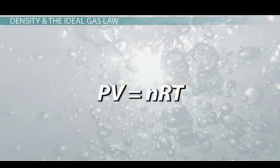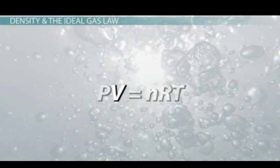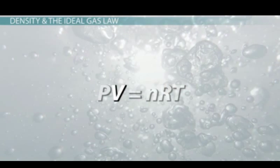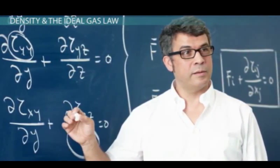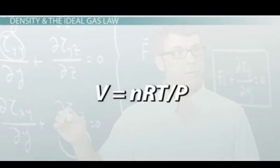You'll notice that volume is a variable in the ideal gas law, but neither density nor mass is a variable. To find density, we have to solve the equation for volume, or V. V equals nRT divided by P.